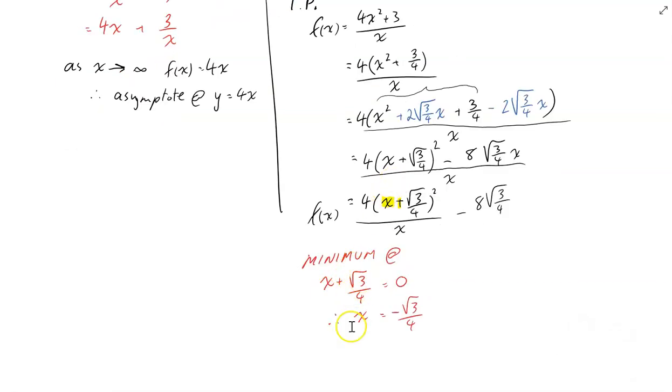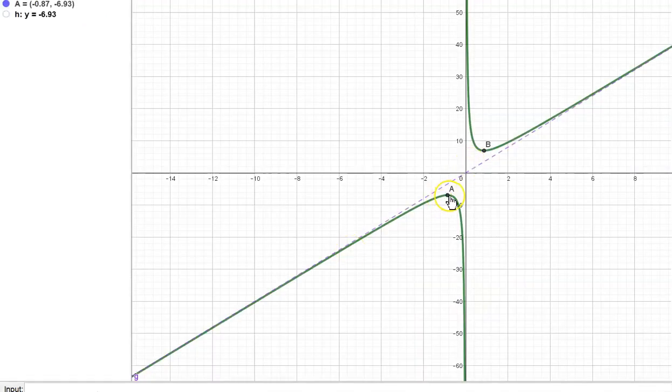So that means that the minimum occurs when I can let that bracket equal 0. At x plus root 3 on 4, a minimum at x, I should say a minimum or a maximum, at x equals negative root 3 on 4. Now at that point, we're going to have negative 8 root 3 on 4 be our y value. Now it's not going to be a minimum, it's going to be a maximum, but we'll just call it a turning point for now. That's a better way to think about it. So x equals negative root 3 on 4, y equals negative 8 root 3 on 4. That point there is that point right there.